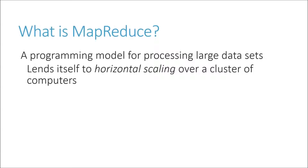The key thing about MapReduce is that it offers a way to horizontally scale data analysis problems. Its programming model lends itself well to distributing work throughout multiple computers on a large cluster — and that's what horizontal scaling means. Vertical scaling would be if you just kept adding more and more resources to one computer to make it faster and more efficient, but there's an upper bound to that. You can only beef up one computer so much.